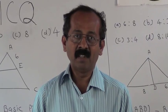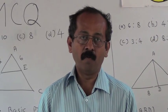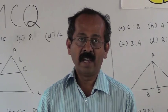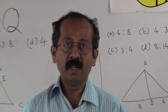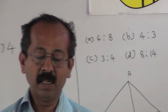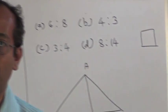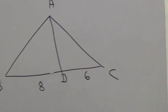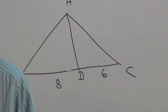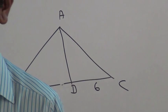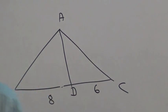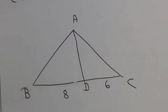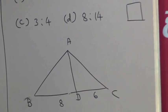Examples are given in the article of Lok Satya Yashashvibhava. Example 1: In triangle ABC, D is a point on side BC such that BD is 8 cm and DC is 6 cm. What is the ratio of area of triangle ABD to area of triangle ADC?